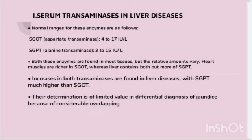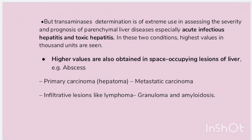Transaminase determination is of extreme use in assessing the severity and prognosis of parenchymal liver diseases, especially acute infectious hepatitis and toxic hepatitis. In these two conditions, the highest values in the thousands of units are seen. Higher values are also obtained in space-occupying lesions of the liver such as abscess, primary carcinoma (hepatoma), metastatic carcinoma, and infiltrative lesions like lymphoma, granuloma, and amyloidosis.